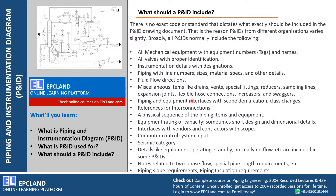Piping and equipment interfaces are shown — what kind of nozzles are there, their rating and size — and demarcation is done for these interfaces. References for interconnections are provided, so if something is not detailed in a particular P&ID, a specific reference is given to obtain those details. The physical sequence of piping items is the most important part — how items are connected, how flow moves from one point to another, how they are associated with other equipment. Equipment rating and capacity, and sometimes short design and dimensional details, are also mentioned.